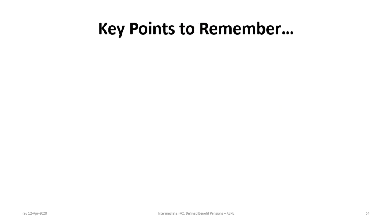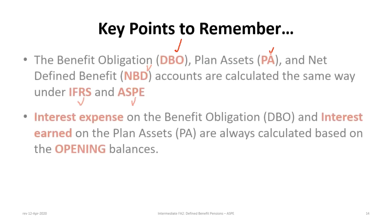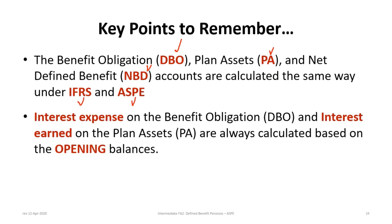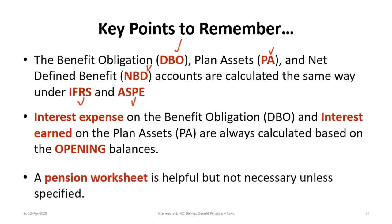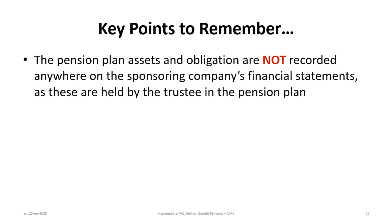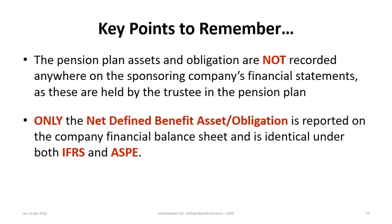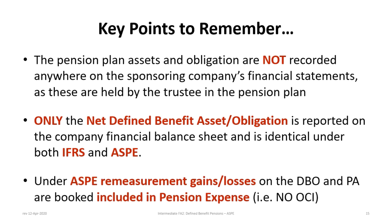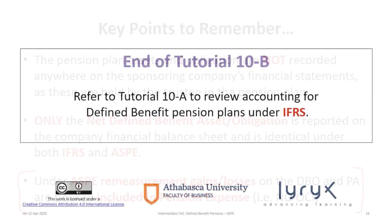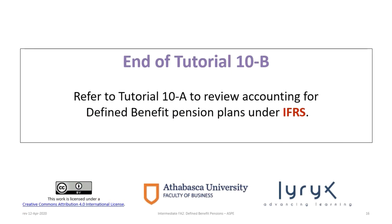To wrap up with some points to remember: the DBO, the plan assets, and the net defined benefit account are all calculated the same way under IFRS and ASPE. Interest expense on the DBO and interest earned on the plan assets should always be based on opening balances. The pension worksheet is helpful but not necessary unless specified. The pension plan assets and obligation are not on the company's financial statements — they're held by the trustee. The only thing on the company's financial statements is the balance of the net defined benefit asset or obligation, the same under both ASPE and IFRS. The major difference: under ASPE, remeasurement gains or losses on the DBO and plan assets are booked to pension expense, not to OCI. This concludes tutorial 10b on accounting for defined benefit pensions under ASPE.